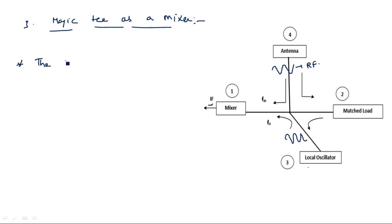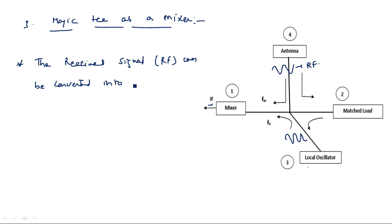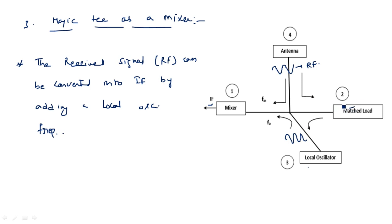The received signal in RF form can be converted into intermediate frequency by adding a local oscillator frequency signal. If any leakage power is present at the junction, that will go towards the match load. So these are the main applications of magic T: magic T as a mixer, magic T as a duplexer, and magic T used to detect the unknown impedance by comparing with the known impedance. Thank you.